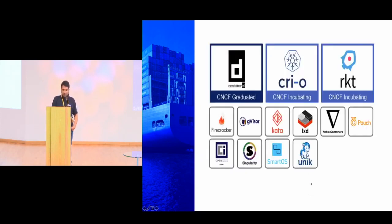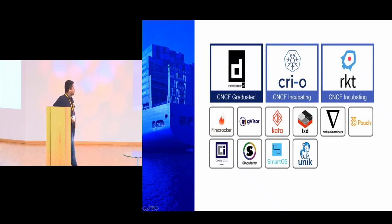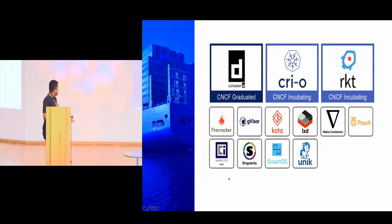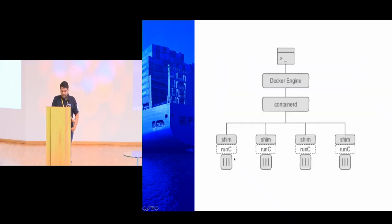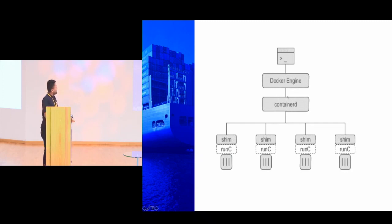These are the major runtimes available. containerd is one of the important ones. LXD — Linux Containers — was used earlier but is no longer in common use. CRIU is an implementation done by the Kubernetes team. Firecracker is a runtime that came out of AWS. When you issue a command like 'docker run', it goes to the Docker engine, then to containerd, then containerd starts a shim, that shim starts RunC, and RunC starts the container. Next time you run a container, try doing 'ps' on the host — you'll see containerd-shim and nginx as processes.